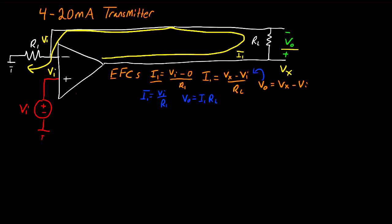So now what's normally done with a 4 to 20 milliamp transmitter is VI is set between 1 and 5 volts, and R1 is set to equal 250 ohms. Now plugging this into our I1 equation, 1 volt divided by 250 ohms gives you 4 milliamps, and 5 volts divided by 250 ohms is equal to 20 milliamps. So this sets the range that our 4 to 20 milliamp transmitter works at.